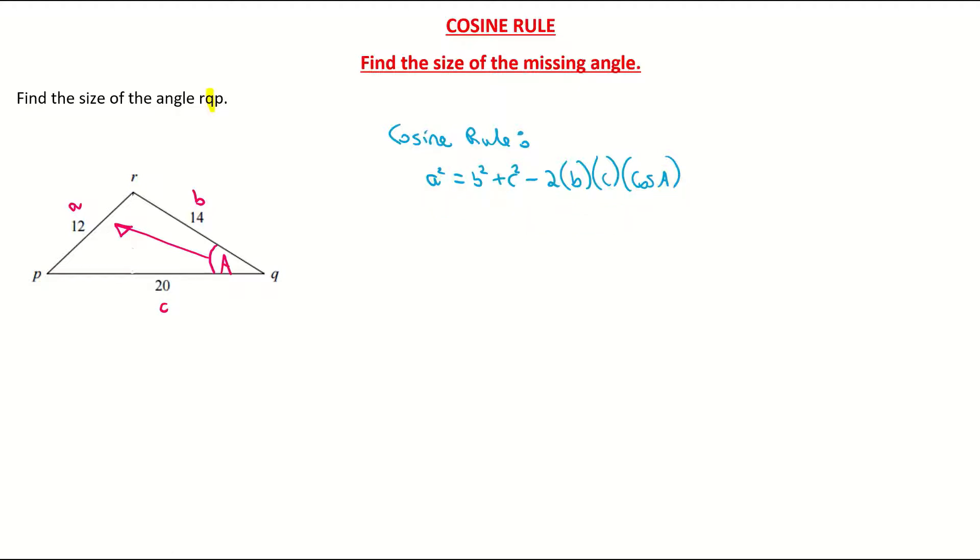Now coming back over here, I'm going to fill in my formula. I'm going to fill in my a as 12, and don't forget that it's squared. That is equal to my b, which is 14, I'm just going to put them in brackets here, plus my c, and my c is 20, all to be squared, minus 2 times b, which is 2 times 14, times my 20, which is my c, times my cos A. And the A is what I need to find.